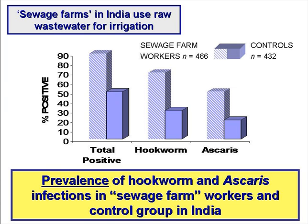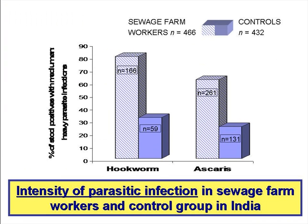First, we're going to look at some evidence from India. The chart shows the prevalence of hookworm infection and ascaris infection in a group of sewage farm workers — in India, sewage farms means irrigation with untreated wastewater — compared with these infections in a control group. You can see that in both cases, and for the total positive, there are clear excess prevalences of infection. This chart also shows, for the same groups of people, the percentages with medium to heavy intensities of infection with hookworms and ascaris, and there are clear excess intensities of infection between the two groups in both cases.